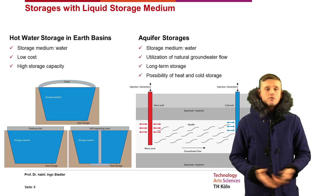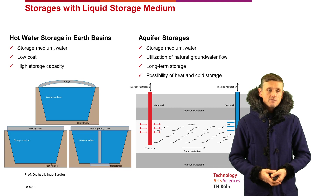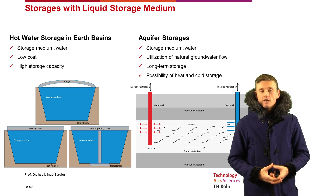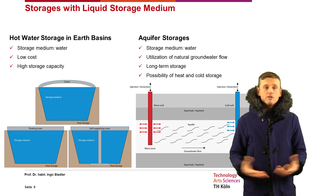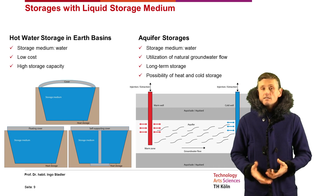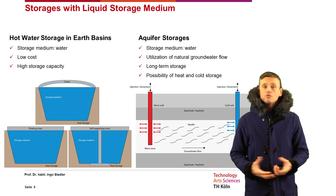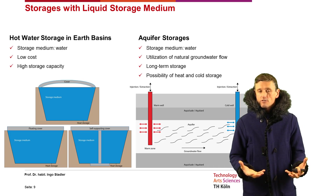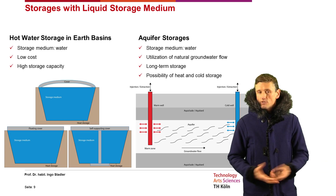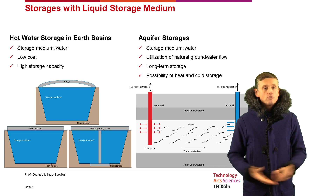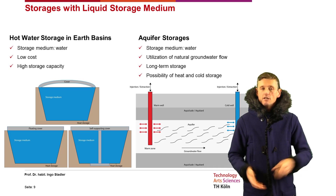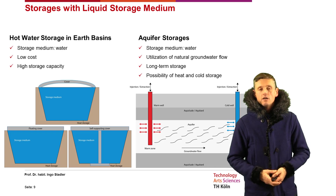Further, we have hot water storage in earth basins. The storage medium is water, at very low cost, enabling very high storage capacities — even seasonal storage becomes possible. On the right side we have aquifer storages, where the storage medium is naturally occurring groundwater in water-conducting layers below ground. These utilize natural groundwater flow, can be realized as long-term storage, and allow both heat and cold storage seasonally — for example for heating and cooling of buildings.